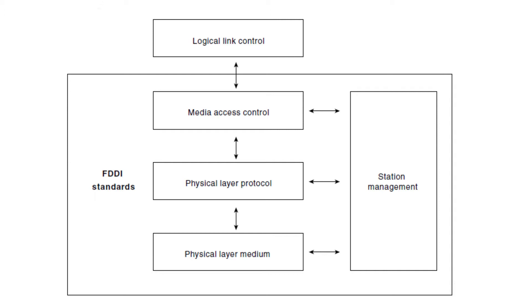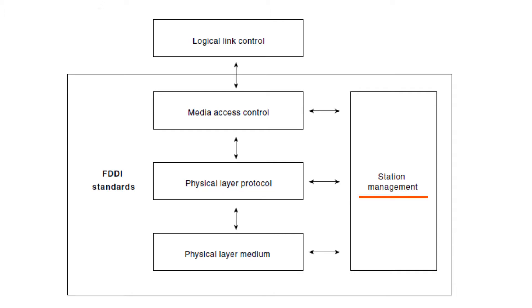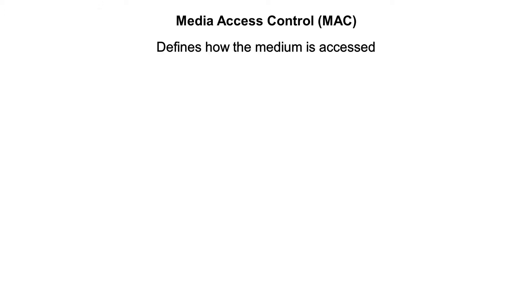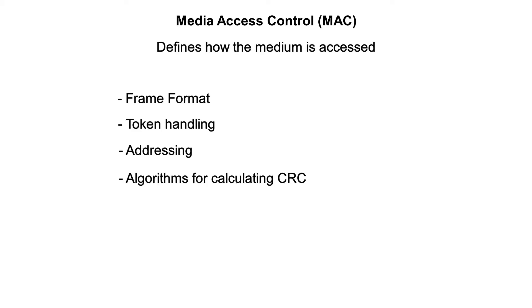FDDI's four specifications are the Media Access Control, Physical Layer Protocol, Physical Medium Dependent, and Station Management specifications. The MAC specification defines how the medium is accessed, including frame format, token handling, addressing, algorithms for calculating cyclic redundancy check values, and error recovery mechanisms.